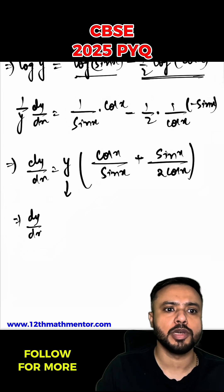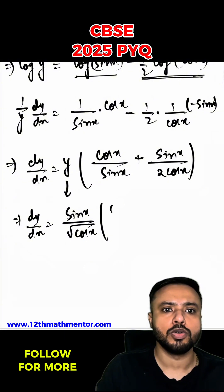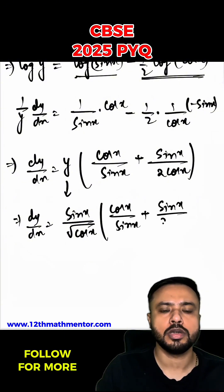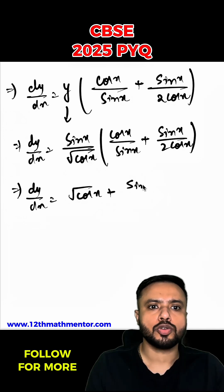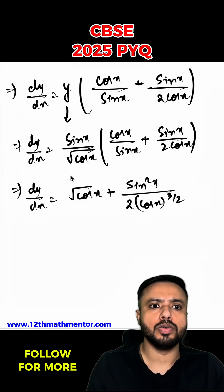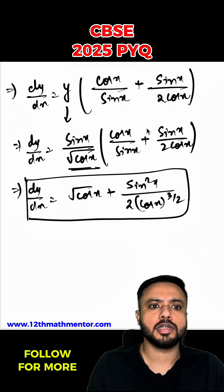So dy upon dx would be equal to sin x upon root of cos x into cos x upon sin x plus sin x upon 2 cos x. So I'll just simplify it a little bit. So dy upon dx would be equal to root of cos x plus sin square x upon 2 into cos x raised to the power 3 by 2.